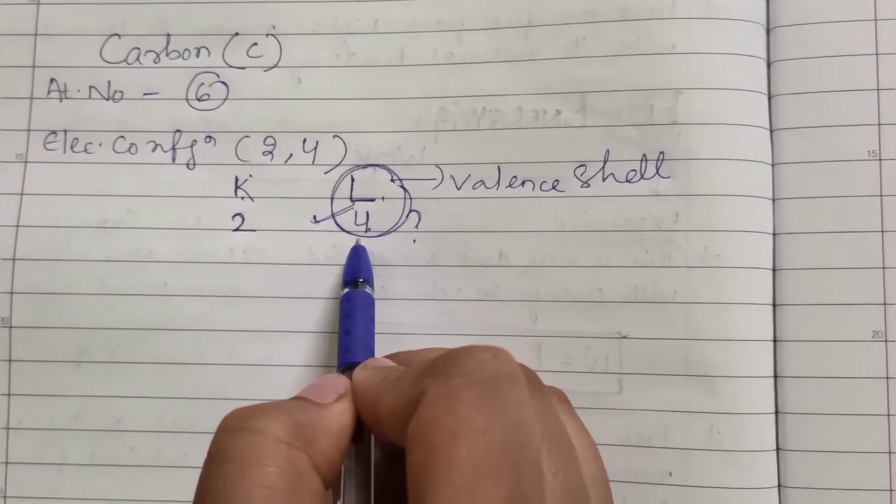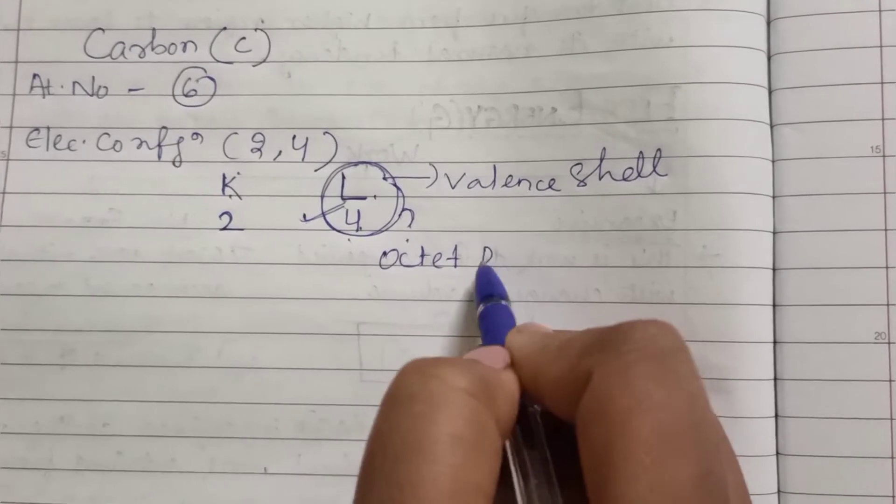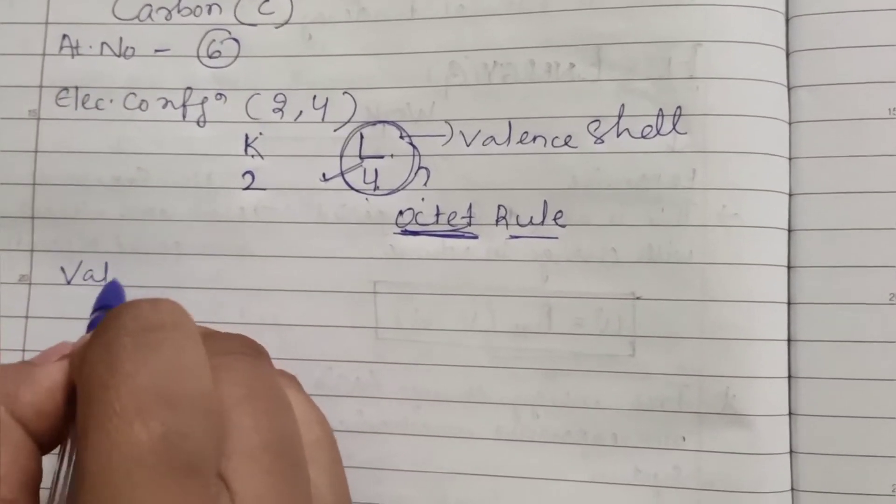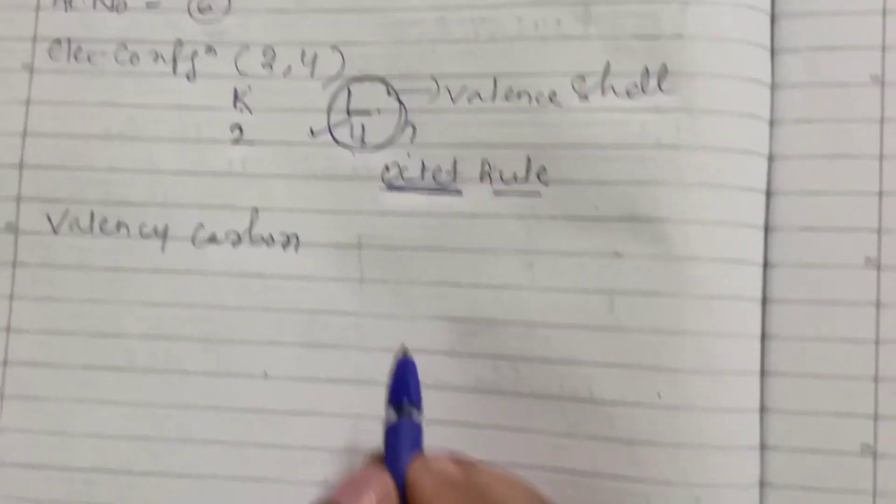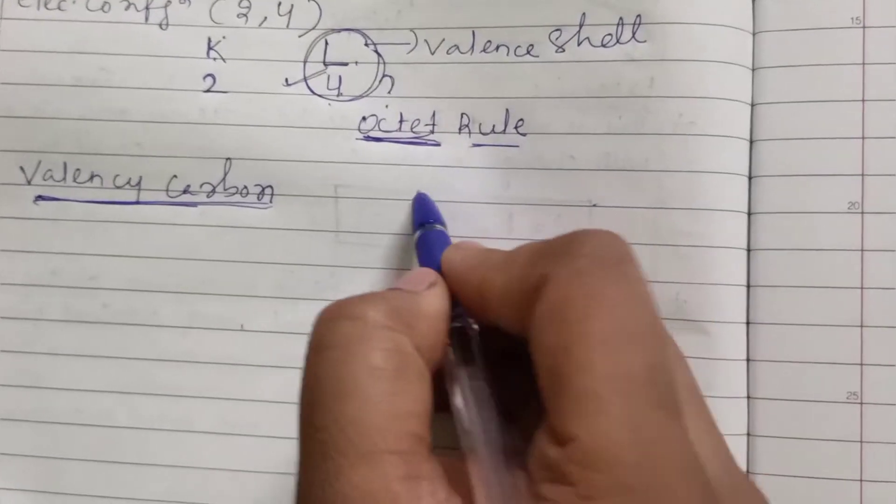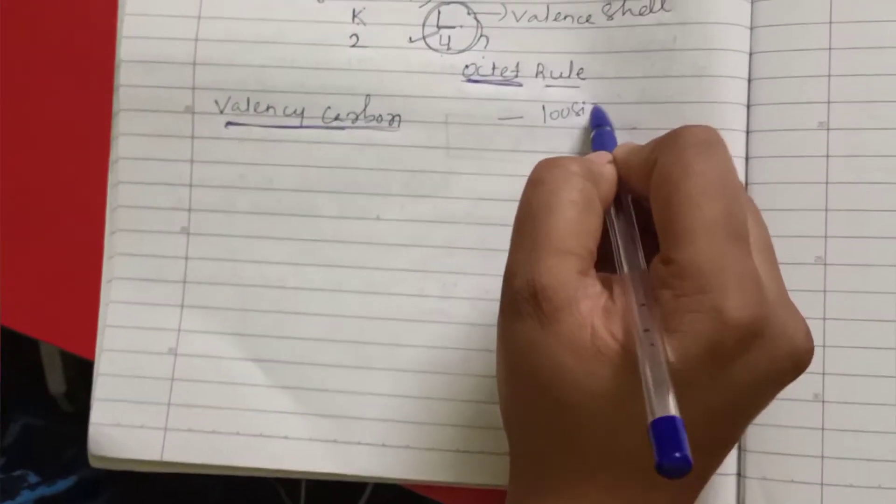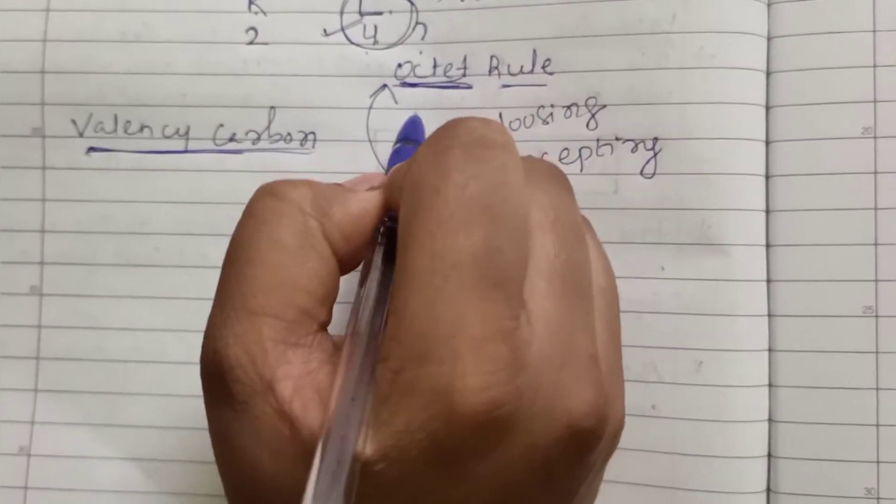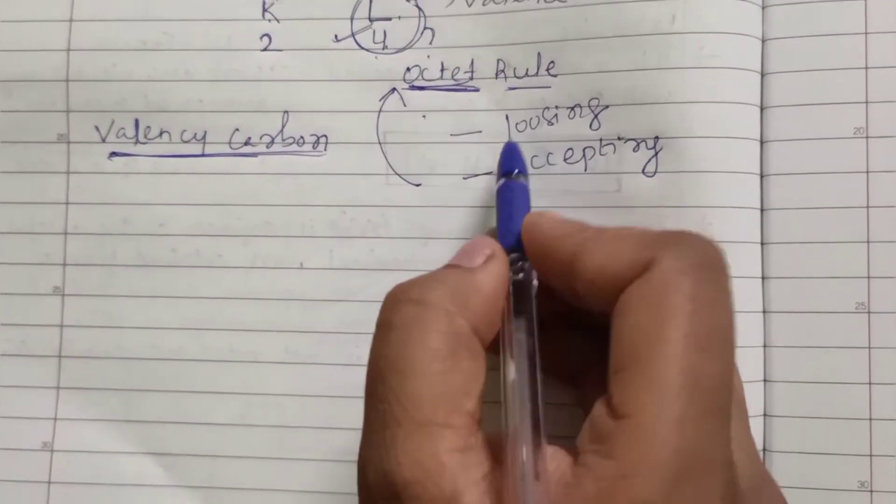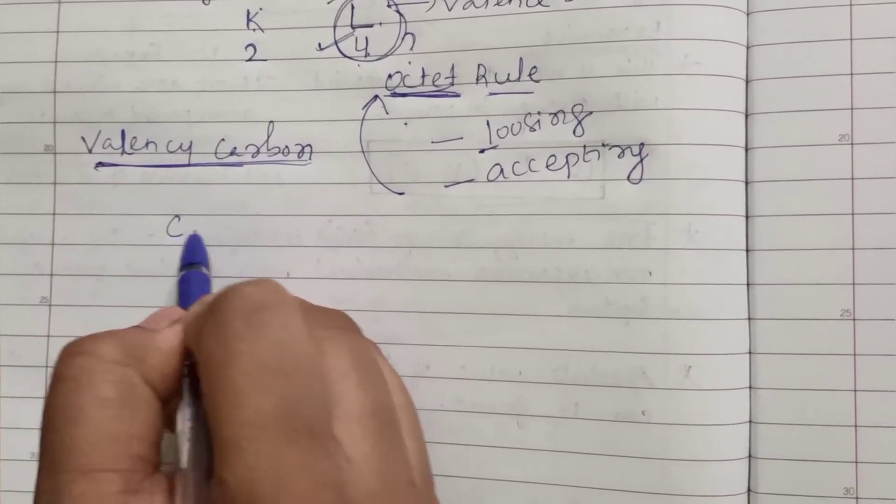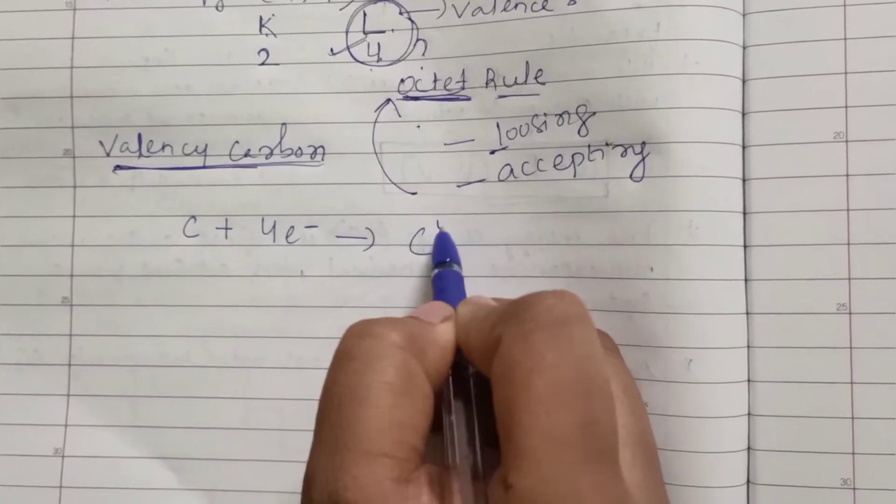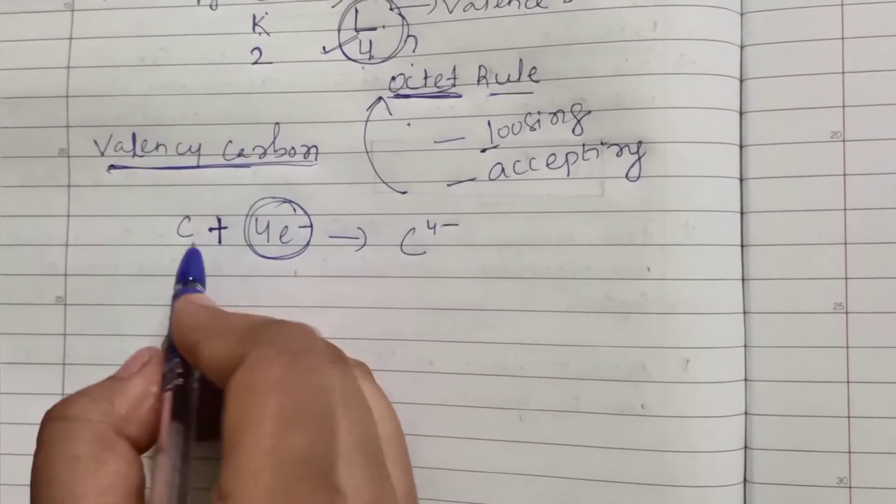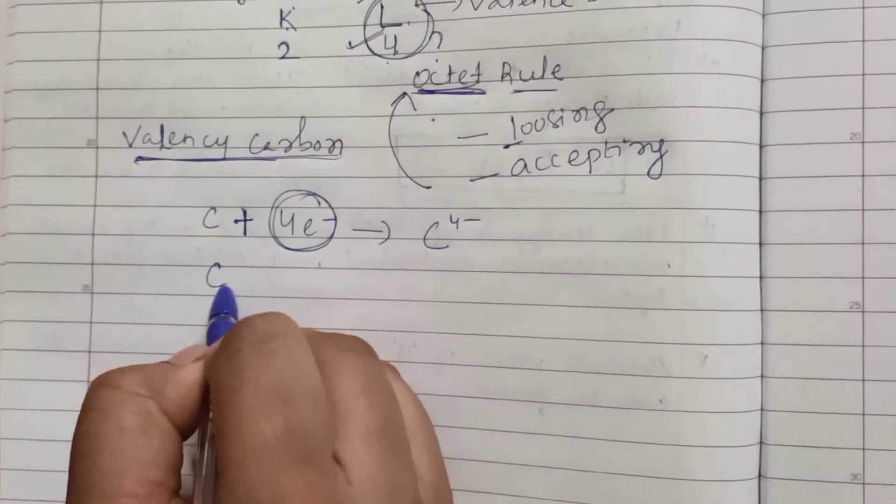Therefore, according to the octet rule, what does carbon need to do to satisfy the octet rule? What should be the valency of carbon? Carbon should do two different things: losing and accepting electrons to attain the octet rule and make its valency stable. It should lose its four electrons, that is C → C4+ + 4e-, or else it should accept four electrons, that is C + 4e- → C4-.